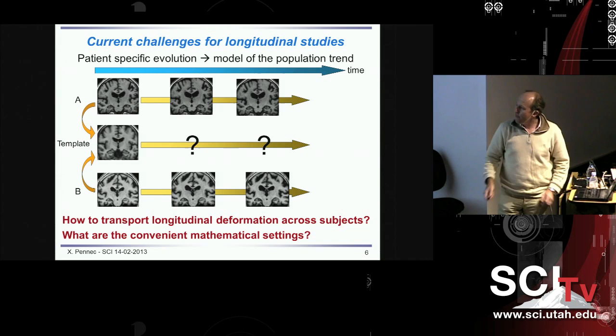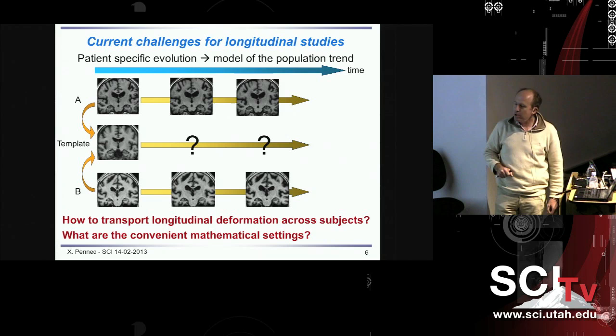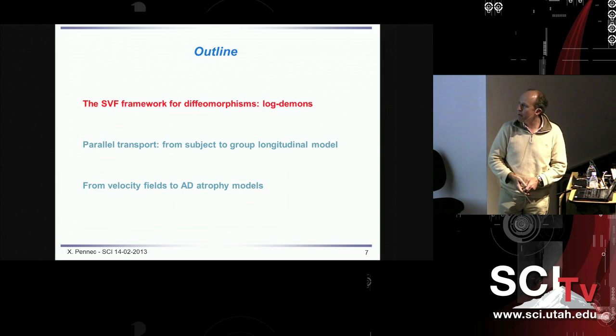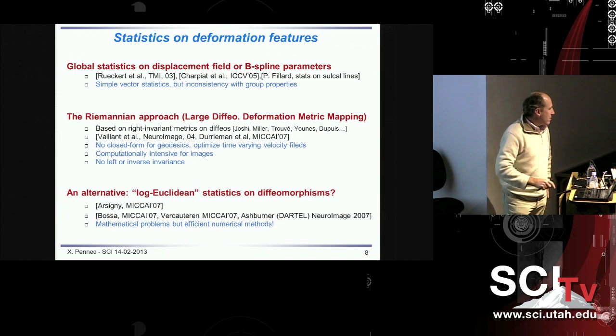The question is: how do we go from the deformation of each subject to the mean deformation of a template representing the population's mean evolution? For doing that, one of the things we need is to transport this deformation into the template — we want to parallel transport trajectories of deformations. That's the whole problem we are going to tackle here. The question is how to transport parallel deformation, and also what's a convenient mathematical setting to do that? I'm going to begin with the second question, by describing the stationary velocity field framework.